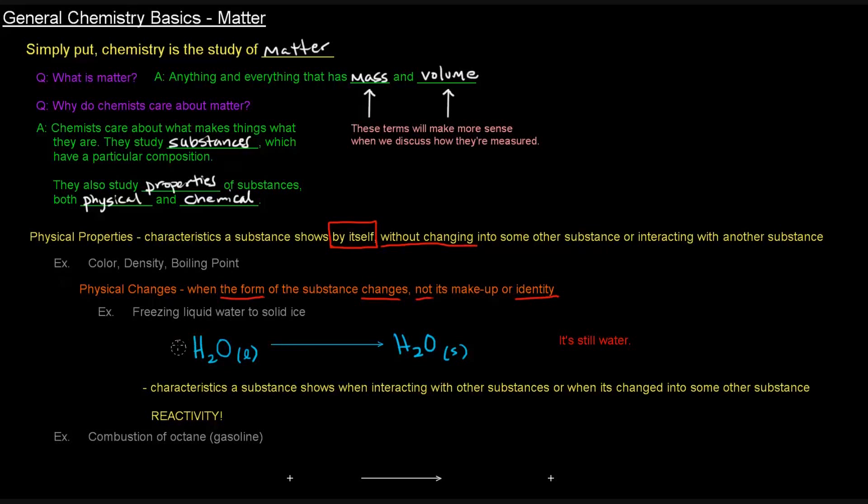It hasn't changed its identity. That is a physical change. So water being a liquid at room temperature and a solid at really cold temperatures, specifically colder than 0 degrees Celsius or 32 degrees Fahrenheit or 273 Kelvin, that is a physical property, whether it's a liquid or a solid. And this is a physical change, changing from liquid to solid. Its identity hasn't changed. It's still water. And that's what I meant by by itself, without changing into some other substance. It's still the same thing.